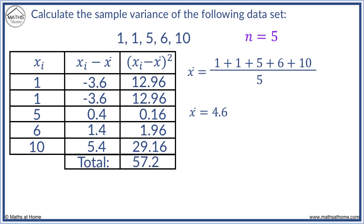We then add these values to obtain a total of 57.2. Finally, we divide the total by n minus 1. n equals 5, so n minus 1 equals 4. 57.2 divided by 4 equals 14.3. The variance of these numbers is 14.3.